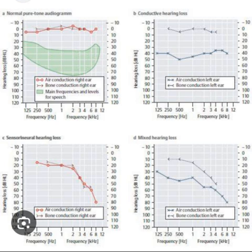Conductive hearing loss occurs due to abnormal transmission of sound through the outer or middle ear without damage to the inner ear. An air-bone gap is noted on the audiogram when the difference between air conduction and bone conduction thresholds at a specific frequency is greater than 15 dB HL. With pure CHL, the bone conduction threshold should be normal but air conduction thresholds indicate hearing loss. CHL may result from cerumen impaction, otitis media, tympanic membrane perforation, ossicular disruption, or a foreign body.